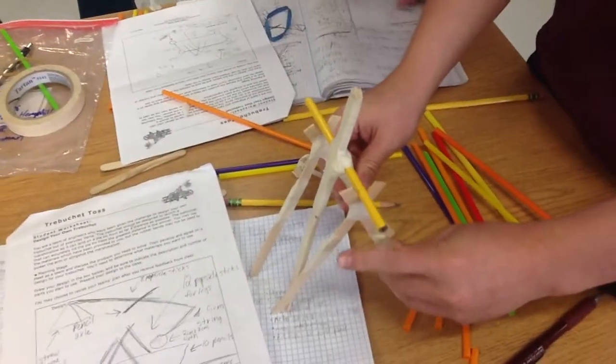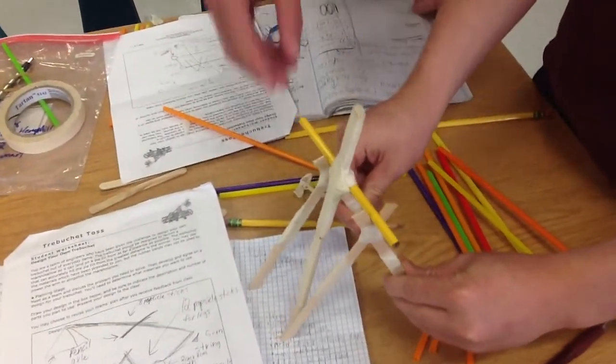Two legs, and this is our throwing arm. Say again? Two legs made out of popsicle sticks, and that's our throwing arm.